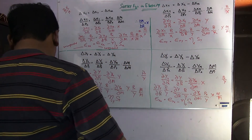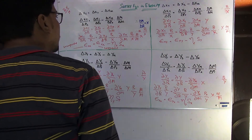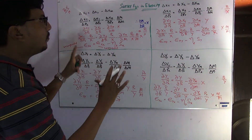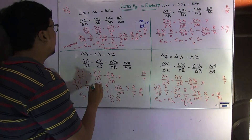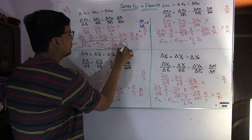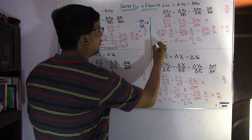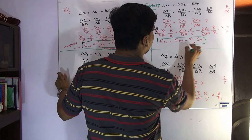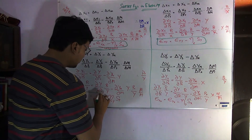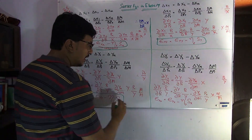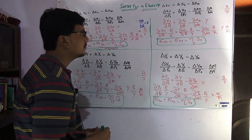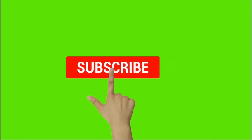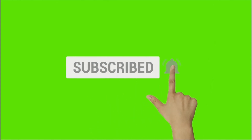To conclude: the four possible Slutsky equations can be converted into four possible elasticity equations. Equation one is the own price elasticity for X, equation two is the cross price elasticity for X with respect to PY, equation three is the own price elasticity for Y, and equation four is the cross price elasticity for Y with respect to PX.